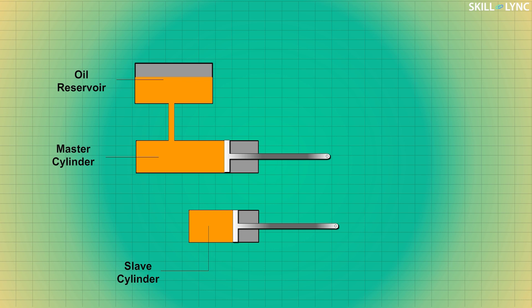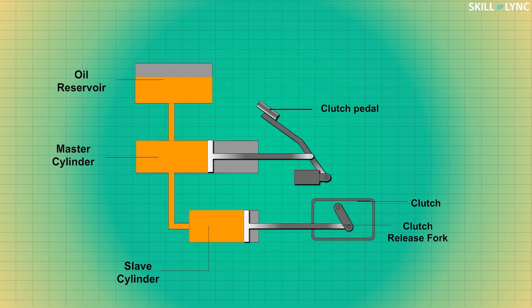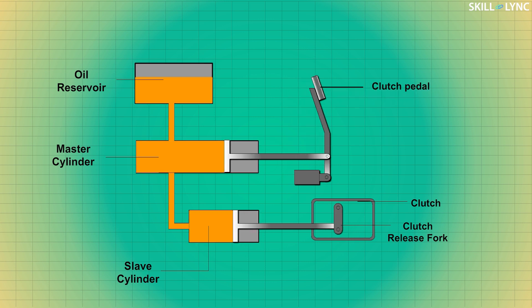The master cylinder is connected to the slave cylinder. The piston of the master cylinder is connected to the clutch pedal, and the piston of the slave cylinder is then connected to the clutch release fork. When the driver depresses the clutch, the piston pressurizes the hydraulic fluid in the master cylinder.